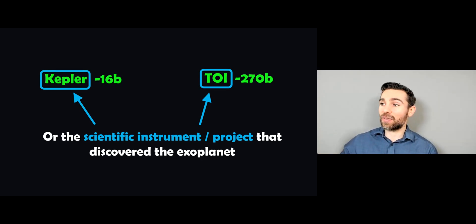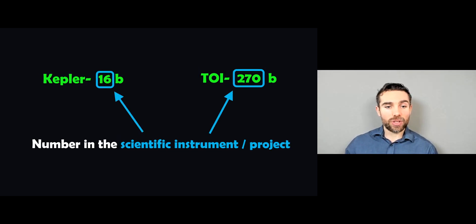And this would then give the first part of the name to the exoplanet. And then that number afterwards would relate to the number in the scientific instrument project discovery. So it relates to how it was discovered.